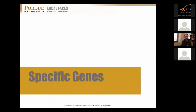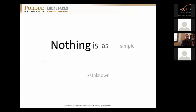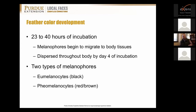Now let's talk about specific genes. Nothing is as simple as we hope. When discussing feather color development, within 23 to 40 hours of incubation there are cells called melanophores that begin to migrate throughout the body tissue of the embryo. By day four, they are present everywhere. There are two types: black — the eumelenocytes — and red or brown, called the phaeomelanocytes. How these melanophores are regulated will dictate the feather color those birds produce as they get older.